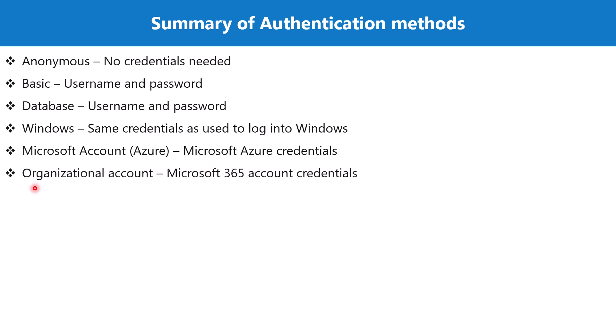The next authentication method is organizational account, similar to what we use in the case of SharePoint, where Microsoft 365 account credentials are used to connect to Microsoft 365 resources like SharePoint. Another authentication method is the API key, which is used to connect to a REST API from the Power Query environment. If you are connecting to a REST API, one method is to pass the API key to connect.